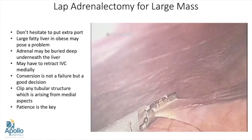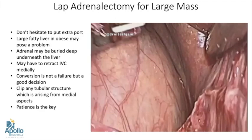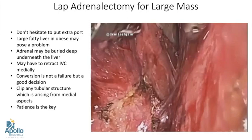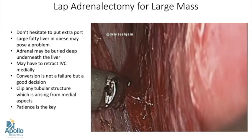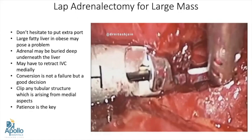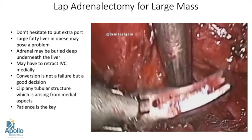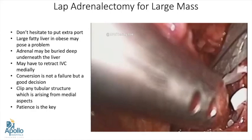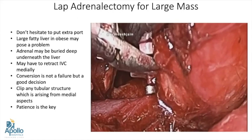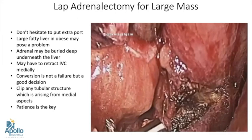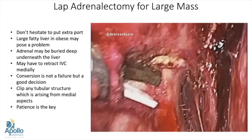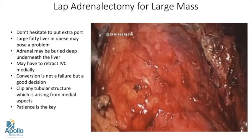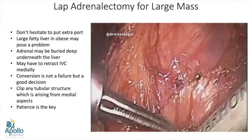All the attachments should be taken care of and the liver can be retracted with the help of a tooth grasper. Many times the adrenal may be buried deep inside the liver — in those cases we need to take out all the attachments onto the mass and the peritoneal attachments so that the risk of capsular tear of the liver is reduced. Many large masses also grow behind the IVC, so the IVC may have to be retracted medially. For that, we may need an extra port either suprapubically or at the midpoint between the xiphisternum and the umbilicus. Remember, conversion is not a failure but a good decision. If any tubular structure is seen, especially on the medial side, it should be clipped or harmonized depending on its size, as these are usually vessels going into the mass.